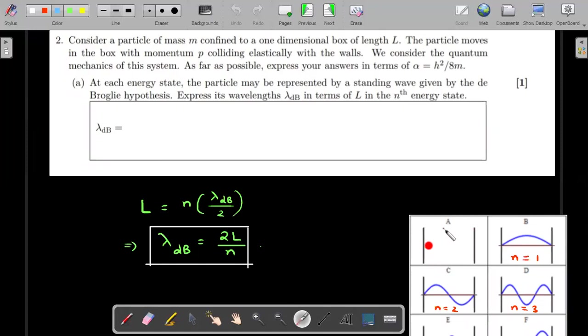At each energy state the particle may be represented by a standing wave given by De Broglie hypothesis. Express its wavelength lambda_db in terms of L and the nth energy state. So you could consider the particle moving back and forth and forming standing waves, just like your string fixed at both ends. So n equal to one state, n equal to two, n equal to three, and for nth state there will be n lobes. Each lobe has a length of lambda by two. So n such lobes of lambda by two will become the length of the box. So L = n(λ/2), therefore lambda_db = 2L/n is the answer.